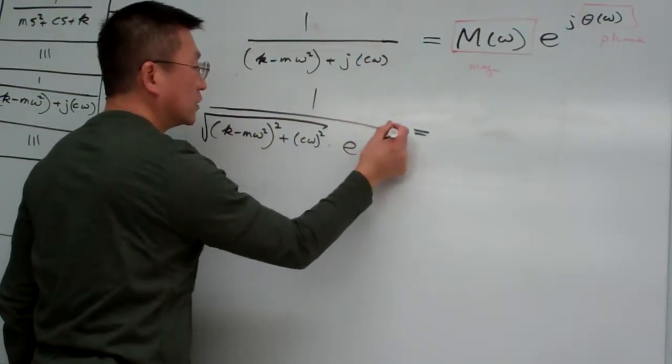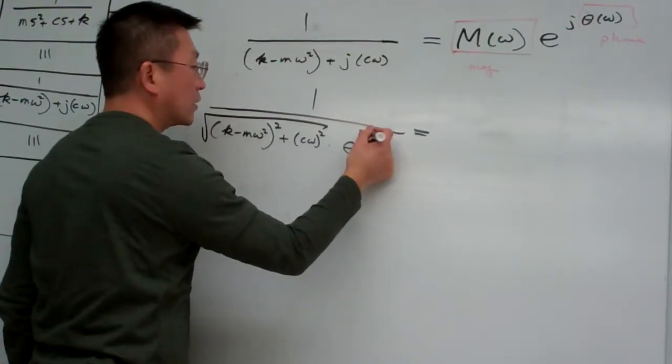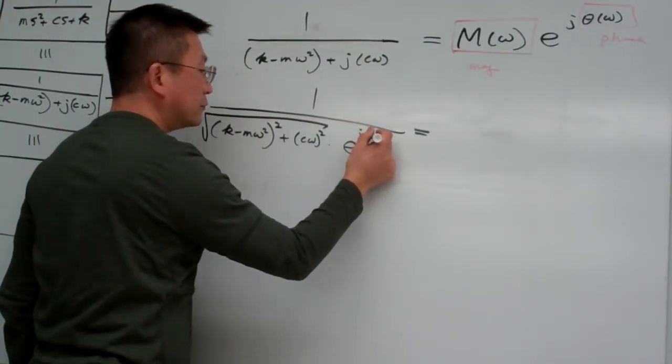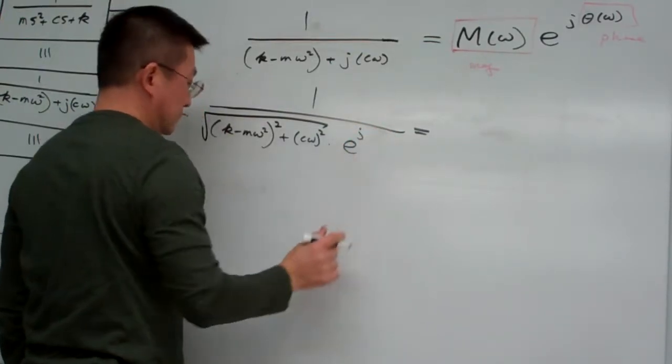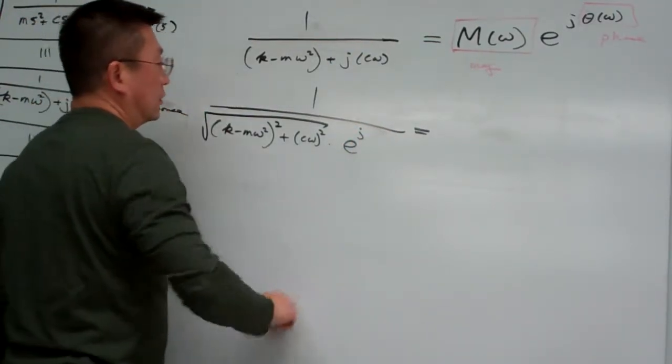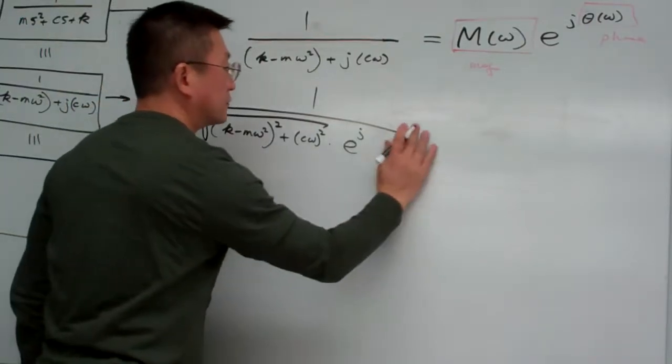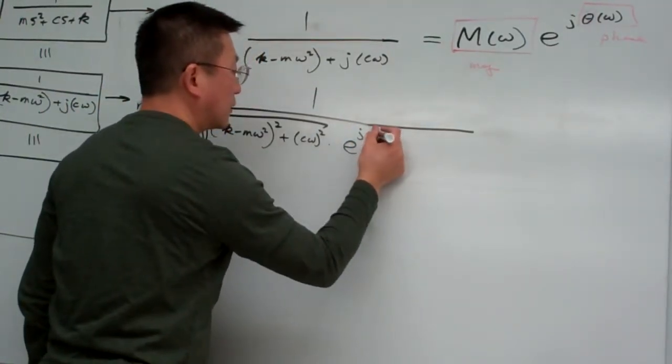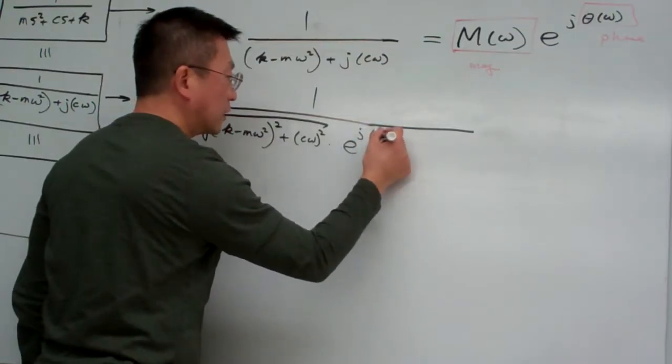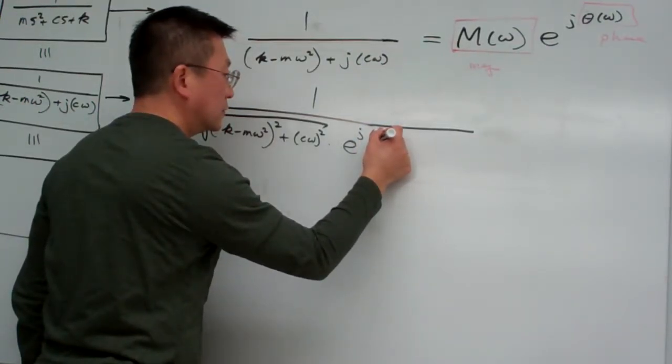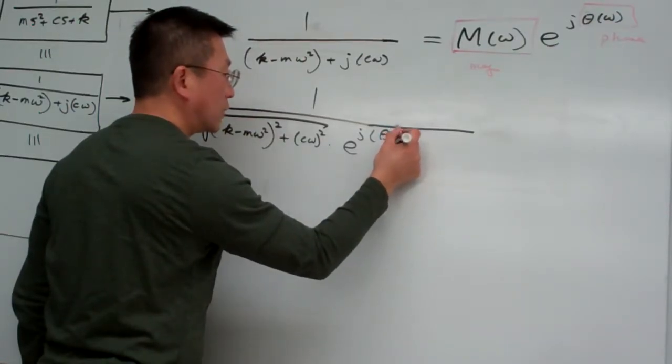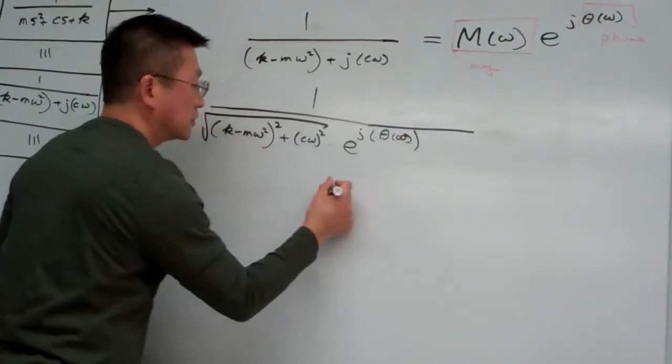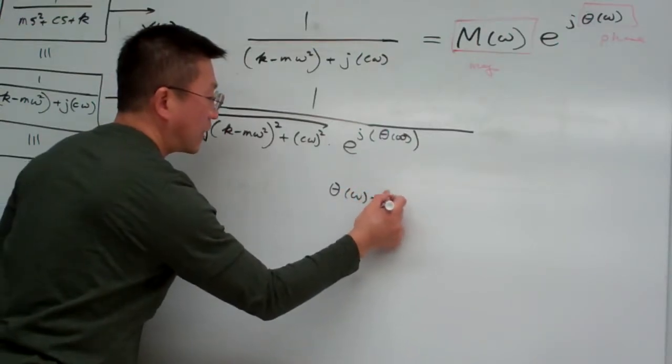Whatever the symbols, say using theta, using theta omega. So theta omega simply is arctangent, right now we're working on it's in the denominator, that is the real part minus this one.